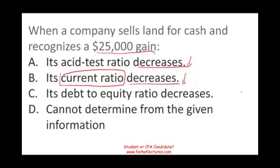We know that we sold land for cash, so cash went up. Cash is a current asset. If cash is a current asset and nothing happened to our liabilities, the current ratio should actually go up because we have more cash and our current liabilities stay the same — it should increase. So immediately, I can eliminate A and B. I'm down to 50-50.